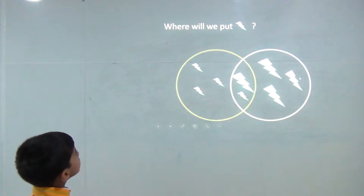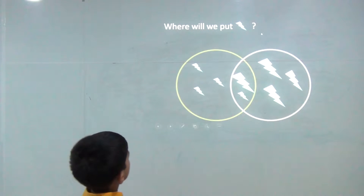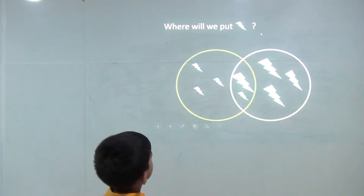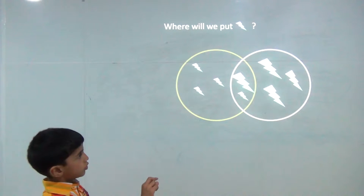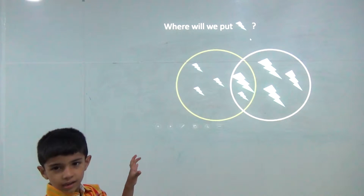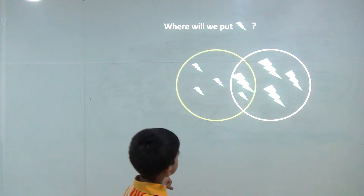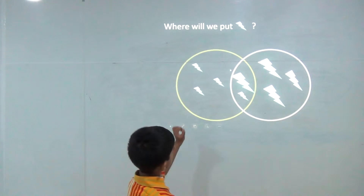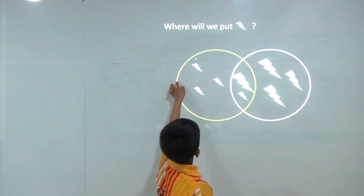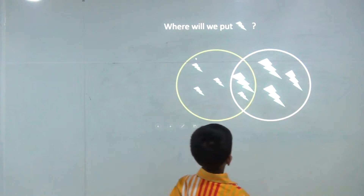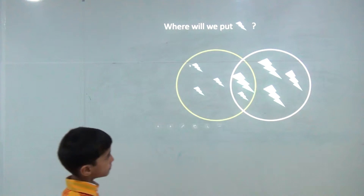Where will we put this? It is a small, light thunder sign. We can put it here, in the yellow circle or in the common area.